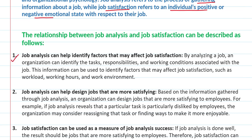The first factor is that job analysis can help identify factors that may affect job satisfaction. By analyzing a job, an organization can identify the tasks, responsibilities, and working conditions. All these things are related to your job satisfaction. This information can be used to identify factors which affect job satisfaction — like workload, working hours, and work environment — all these things are very important.